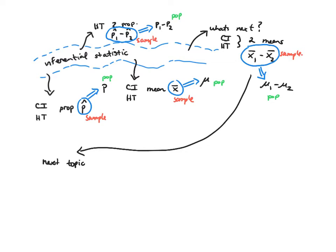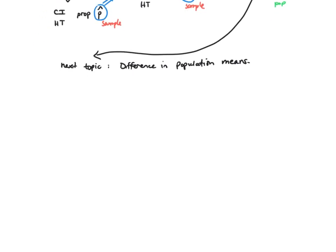We're looking at a case where we might have two different populations that we're comparing against one another, and what we're going to do is look at the difference in population means. To do this, I'm going to use an example based on some midterm score data for this course from a couple of years ago. I split it into females and males and looked at class performance on the midterm in these two categories.